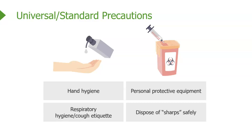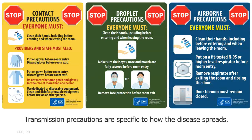When it comes to transmission precautions, these are very specific to how the disease spreads. Different diseases have different parts of these precautions — they may have one, two, or all three of them. COVID-19 has all three of these types of precautions.